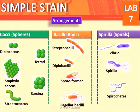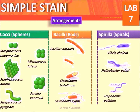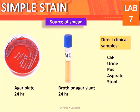Arrangements of cocci include diplococci, tetrads, staphylococci, sarcina, and streptococci. Bacilli arrangements include single bacilli, streptobacilli, diplobacilli, spore-forming bacilli, and flagellated bacilli. Spirella arrangements include vibrio, spirella, and spirochetes. Examples: Streptococcus pneumoniae, Micrococcus, and Staphylococcus aureus.